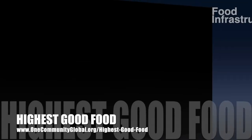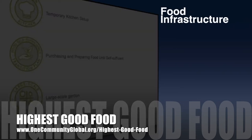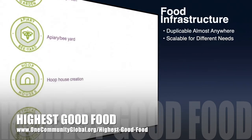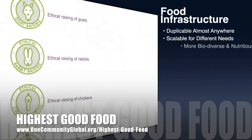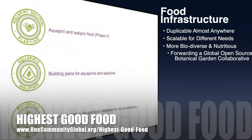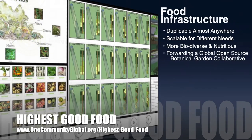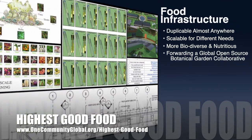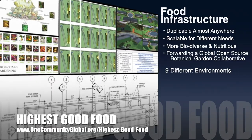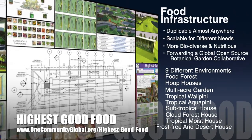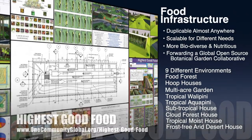One Community's approach to highest good food is duplicable almost anywhere, scalable for different needs, more biodiverse and nutritious, part of forwarding a global open source botanical garden collaborative, and includes nine different free shared and duplicable growing environments.